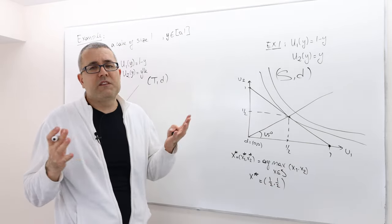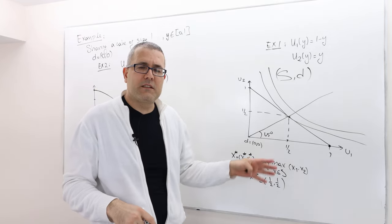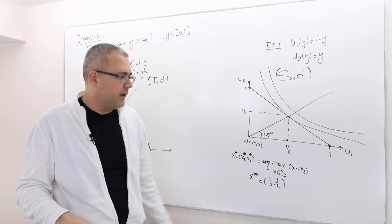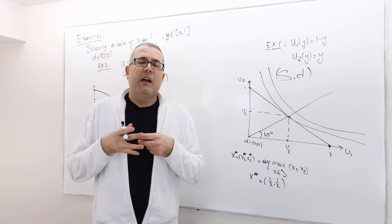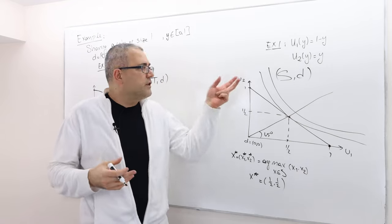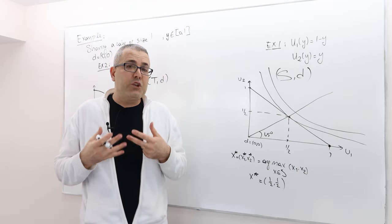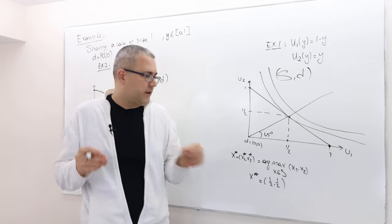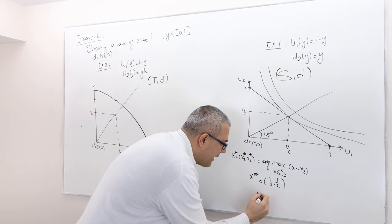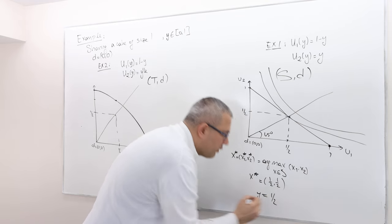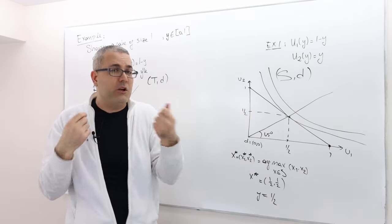If you don't know or forget the symmetry, just solve this maximization problem and you should find X star as such. That means, according to Nash, if these two risk-neutral players negotiate with each other, they should end up at a payoff vector (1/2, 1/2), achieved by choosing Y equals one half — they share the cake equally.